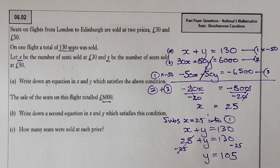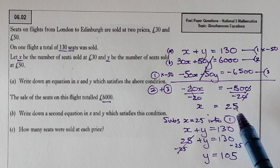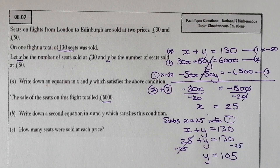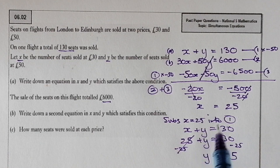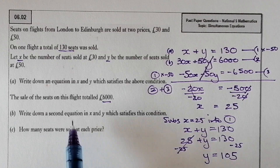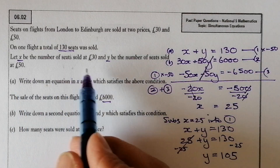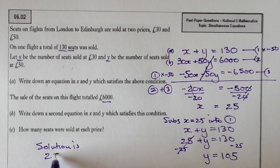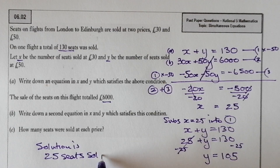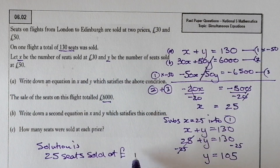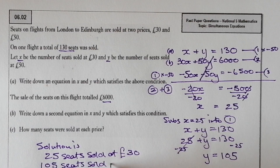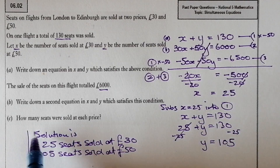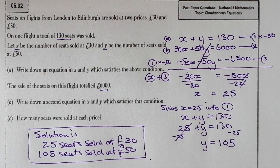So x = 25 and y = 105. I'll write a final statement: 25 seats were sold at £30, and 105 seats were sold at £50. I'll box that as the final solution.